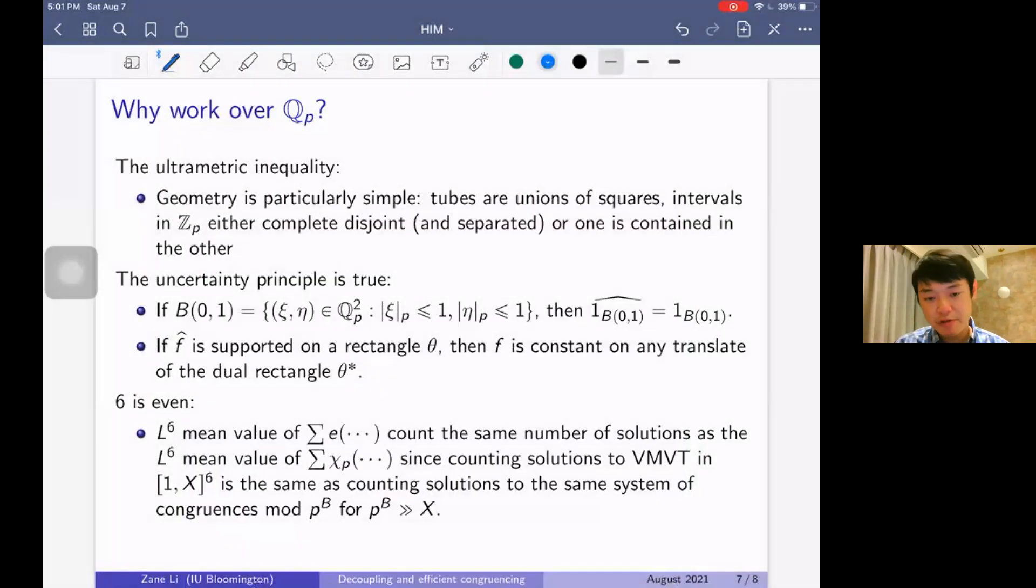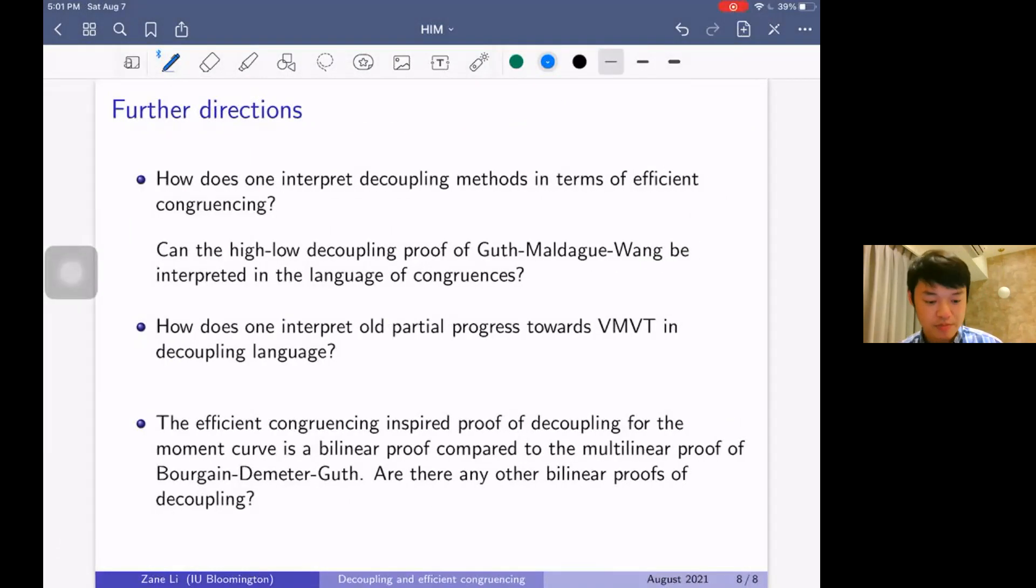Some further directions that I'm also considering: How does one interpret decoupling methods in terms of efficient congruencing? Can the high-low decoupling proof of Guth-Maldague-Wang be interpreted in language of congruences? Po-Lam, Xiumin, and I can do it in Q_p. Can you write a version of that proof purely in the language of congruences with no decoupling language? How does one interpret old partial progress towards Vinogradov in the decoupling language? This is an ongoing project. And another question one can ask is, well, the efficient congruencing inspired proof of decoupling for the moment curve is a bilinear proof, and this is compared to the Bourgain-Demeter proof of decoupling, which is a multilinear proof. Are there any other bilinear proofs of decoupling? How far do these bilinear methods go? Okay, so that's all I have. Thanks everyone for listening.